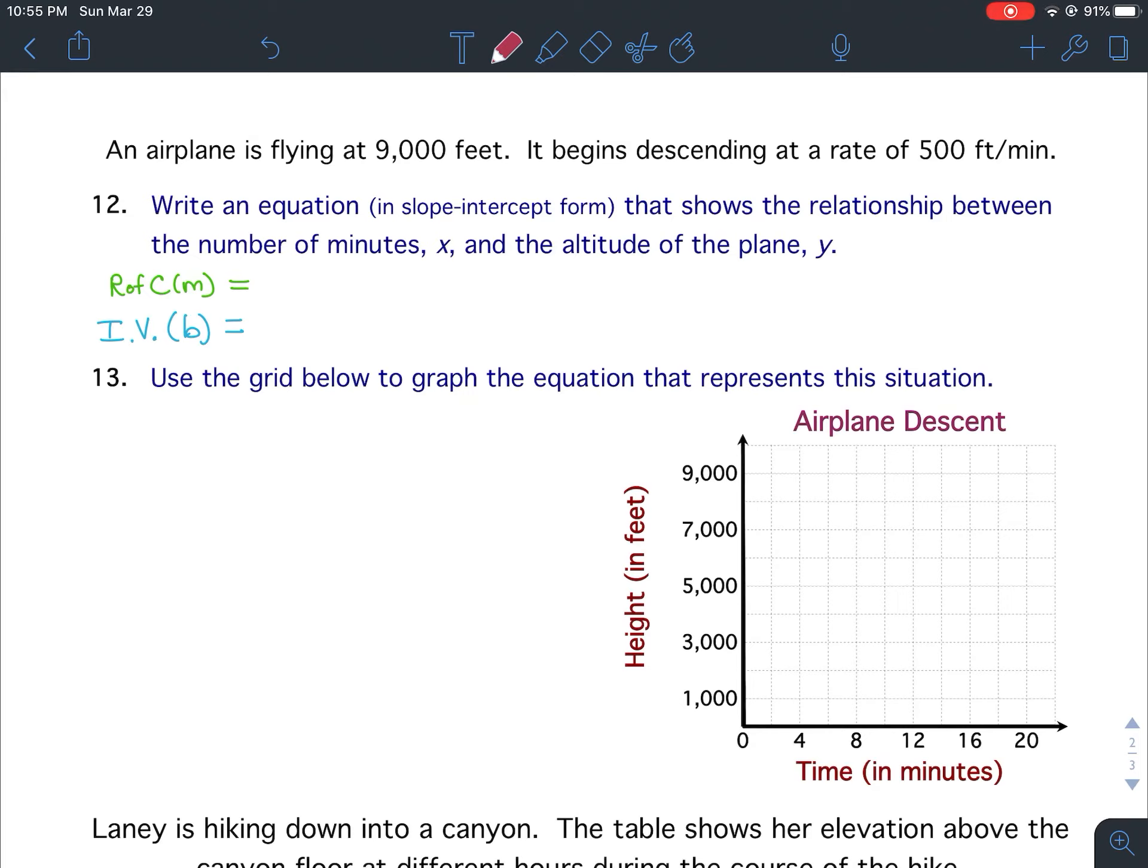So where is its starting value? The initial value is this 9,000 feet. The airplane is starting at 9,000 feet, and then it is descending at a rate of 500 feet per minute. Now, I also want you to underline that word descending.